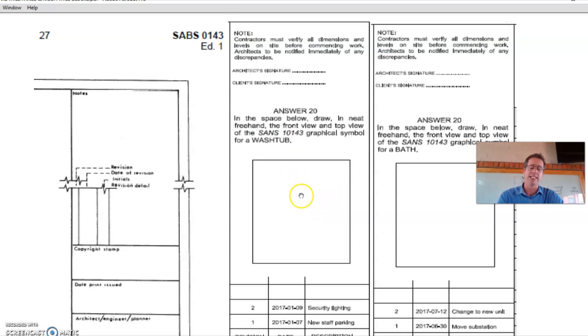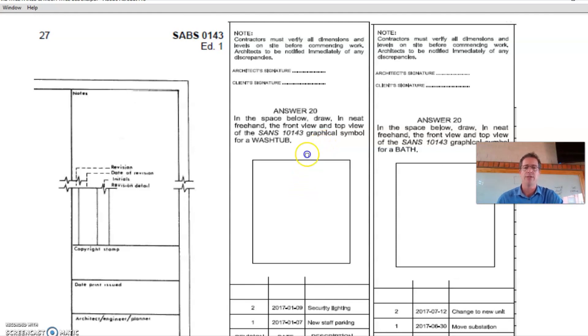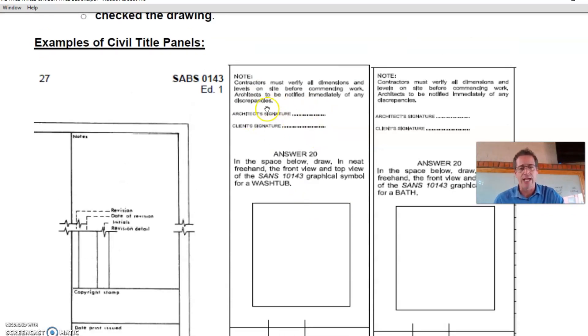In the space below, you can draw symbols that might be required, even projection symbols. Some of my learners in the examples I'm going to show you have put in the actual symbols that they used in their drawing, like for instance a wash basin, etc. Then you're going to have to have your architect signature and the client signature, and there are a couple of notes you can come up with your own notes or you can just copy that.